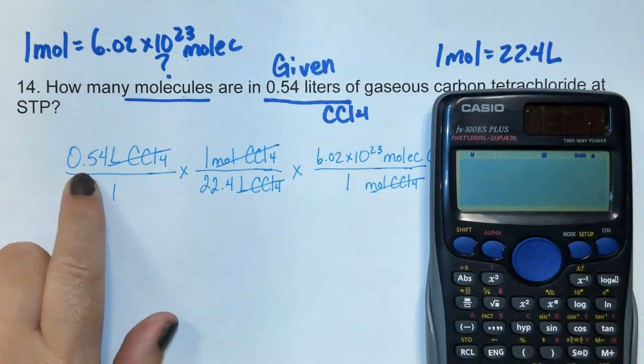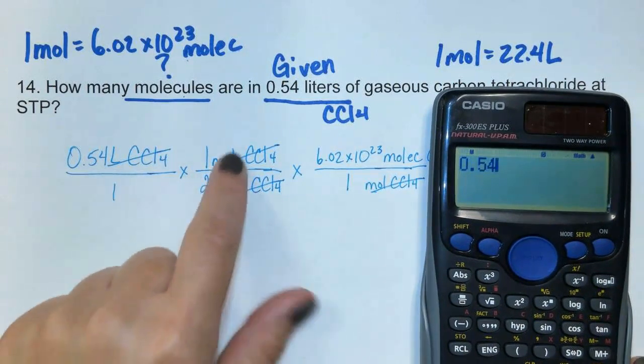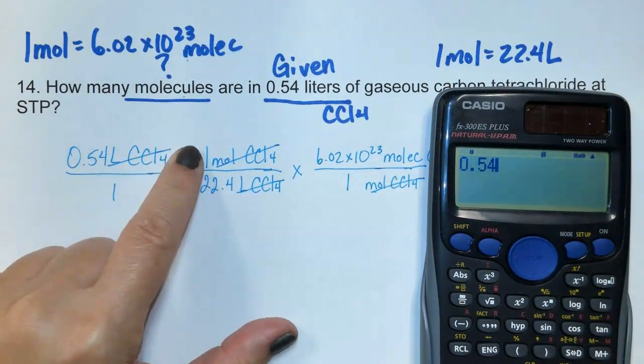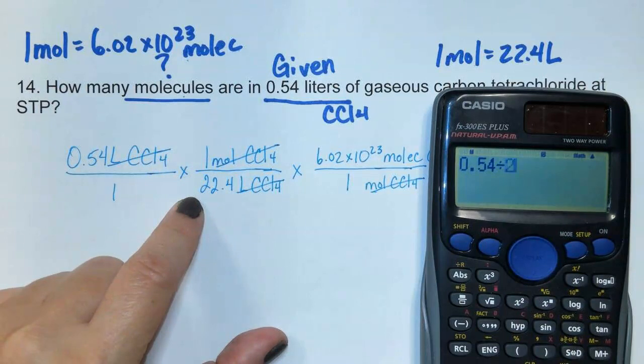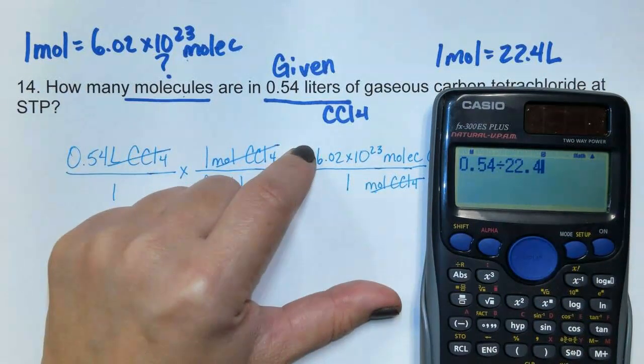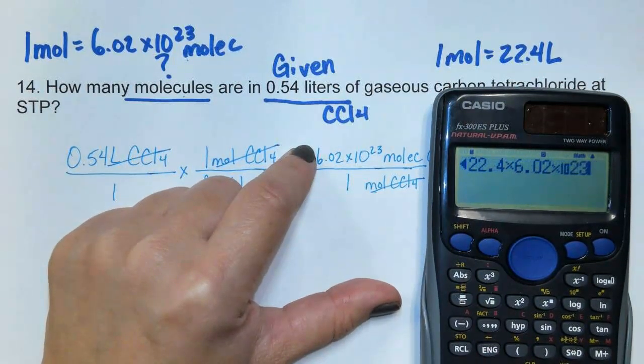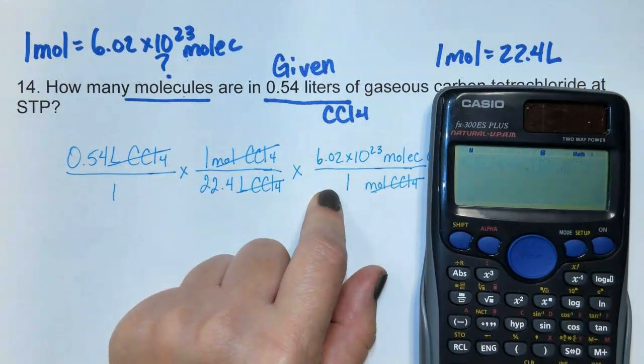So we have 0.54. It's going to be times the top, so times 1, divided by the bottom, divided by 22.4, times the top, 6.02 times 10 to the 23rd, divided by the bottom, equals.